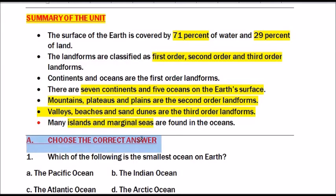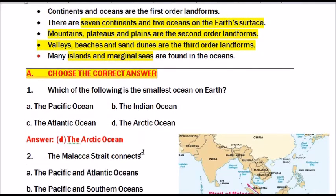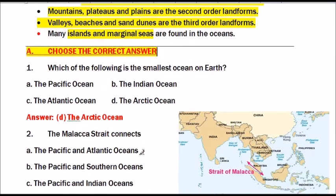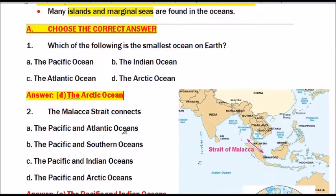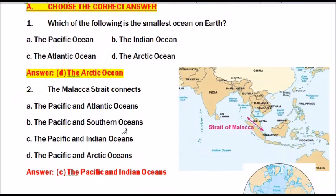Question A: Choose the correct answer. Question number 1: Which of the following is the smallest ocean on earth? Options are Pacific Ocean, Indian Ocean, Atlantic Ocean and Arctic Ocean. The answer is the Arctic Ocean. The Arctic Ocean is the smallest ocean on earth.